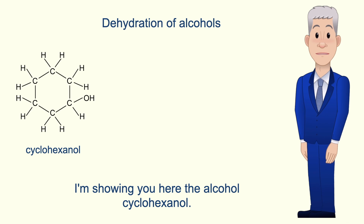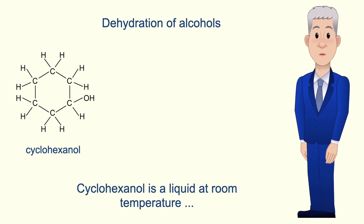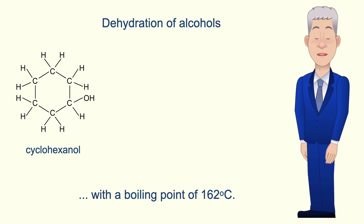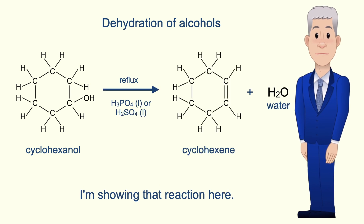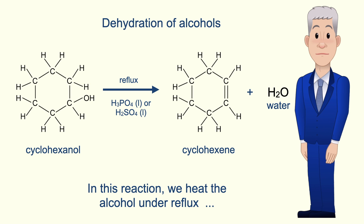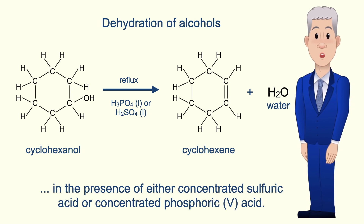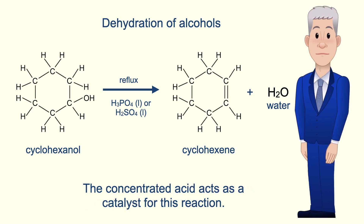I'm showing you here the alcohol cyclohexanol. Cyclohexanol is a liquid at room temperature with a boiling point of 162 degrees Celsius. We can convert alcohols into alkenes, and in this reaction we heat the alcohol under reflux in the presence of either concentrated sulfuric acid or concentrated phosphoric acid. The concentrated acid acts as a catalyst for this reaction.